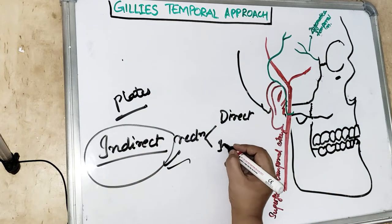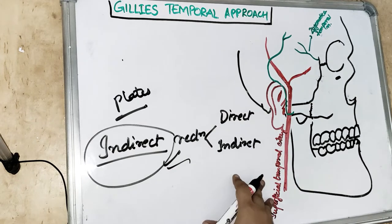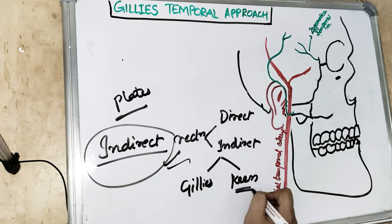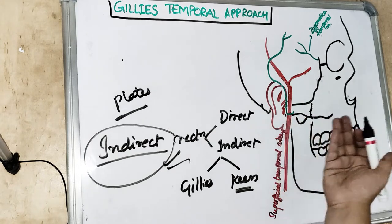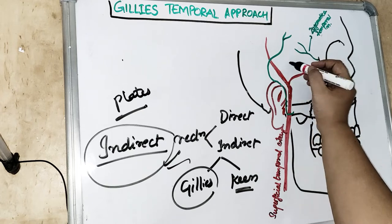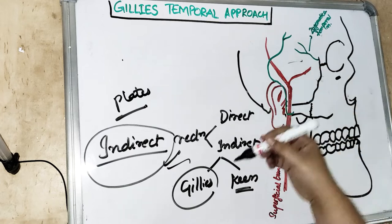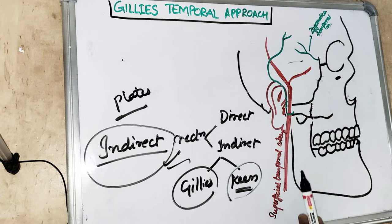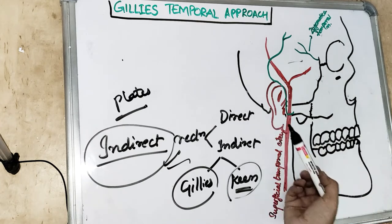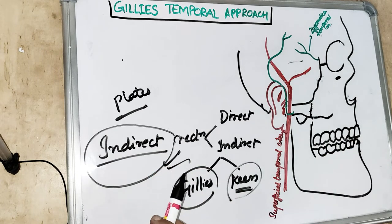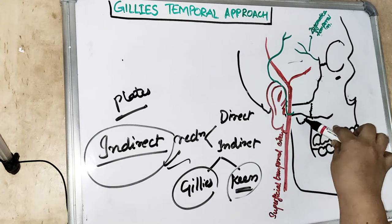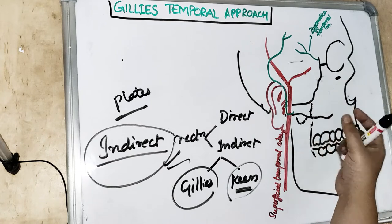The two common indirect approaches are the Gillies temporal approach and the Keen's approach. The Keen's approach is a lateral, intraoral approach — a transoral approach — where we go through the lateral maxillary vestibular region, giving an upper gingivobuccal incision, and from there go up into the zygomatic bone, elevating and repositioning it. The Gillies temporal approach goes from the temporal region, where an incision is made through the temporal fascia from above.